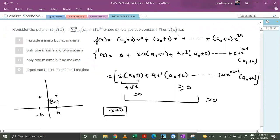We can clearly see that this is forming a minima. Simple. So the option is c: only one minima but no maxima.